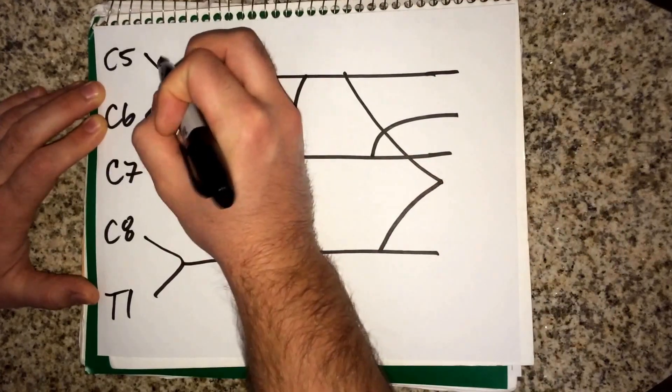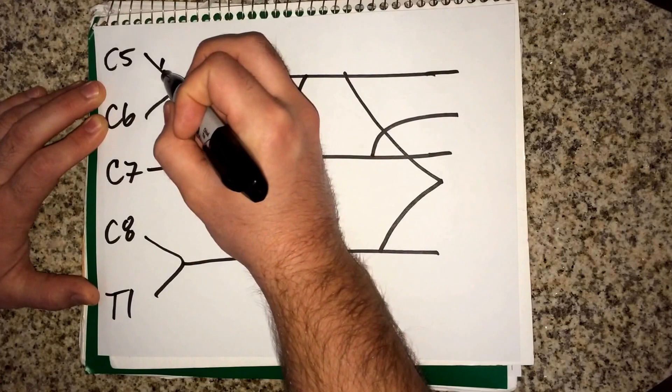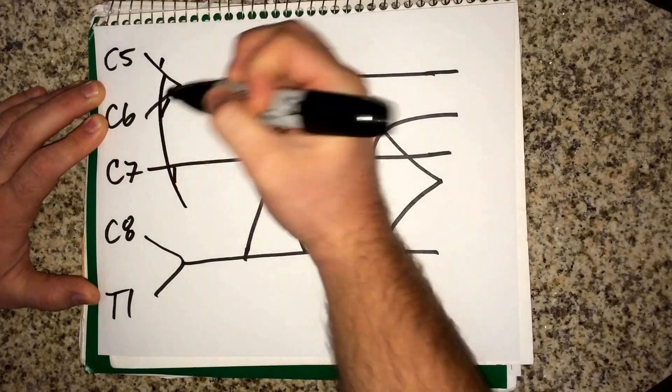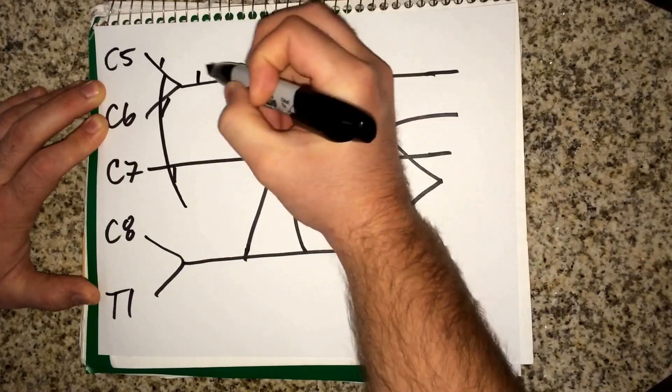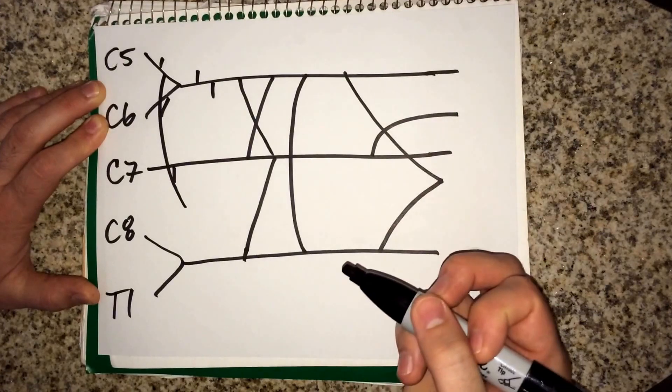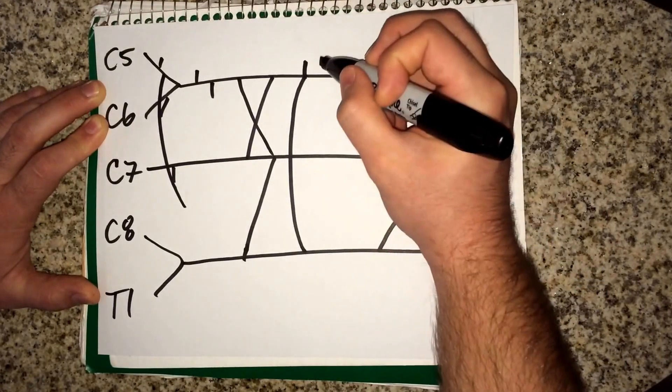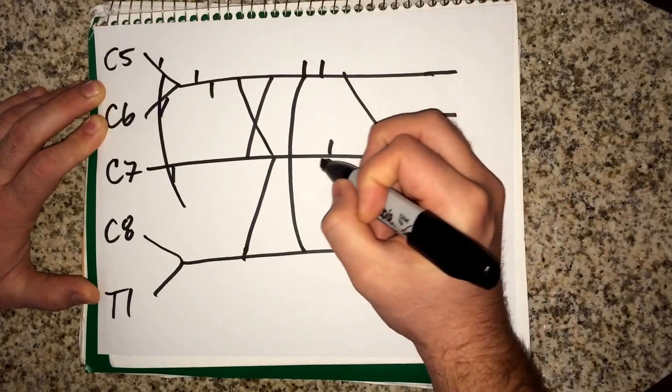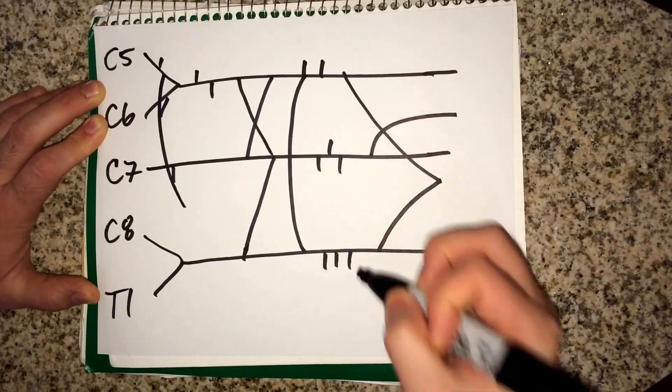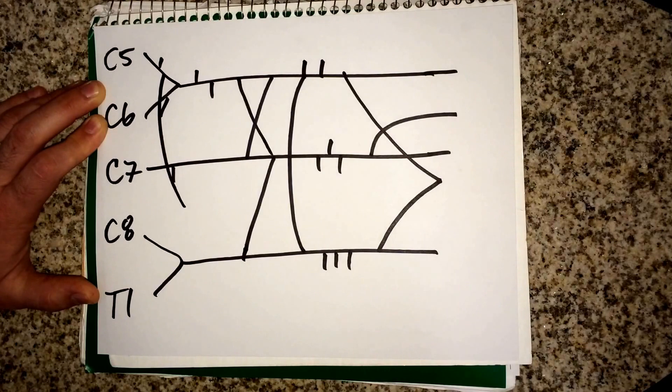And then what we're going to do next is start labeling these little nerves that come off as well. One up, one down, there. And then we have one coming off this branch right here, another one next to it. You have one up, two down, and then three down. And that's pretty much it.